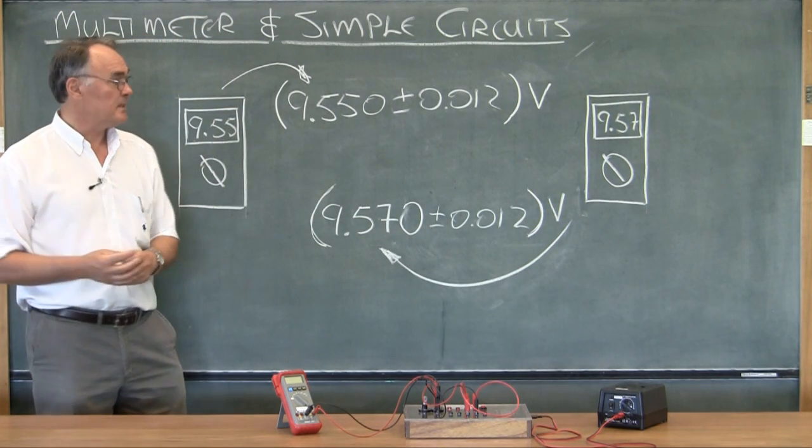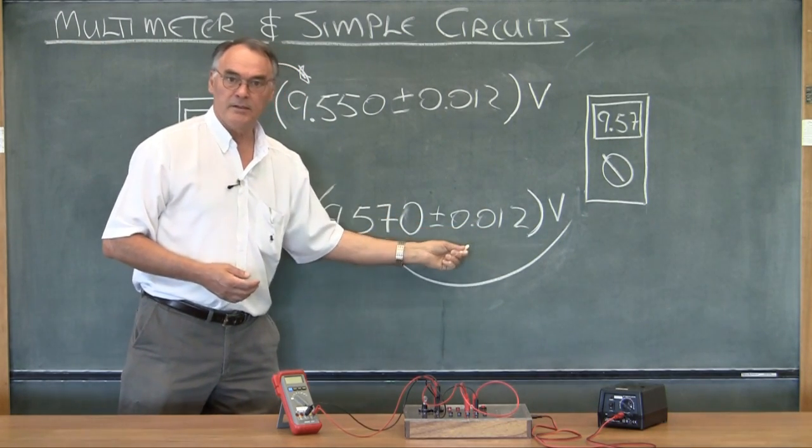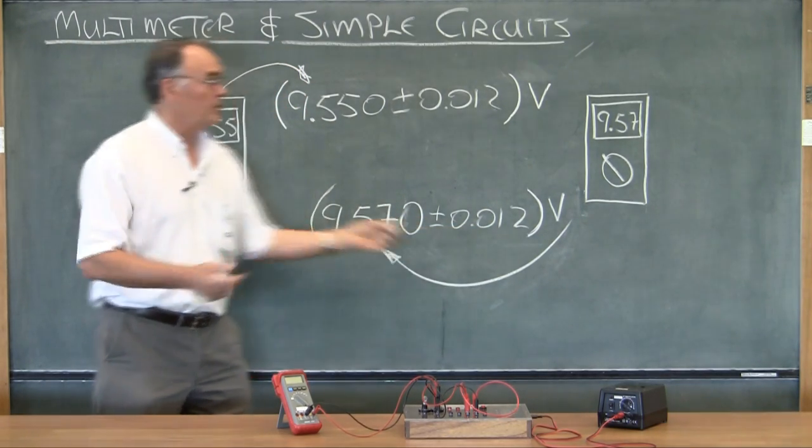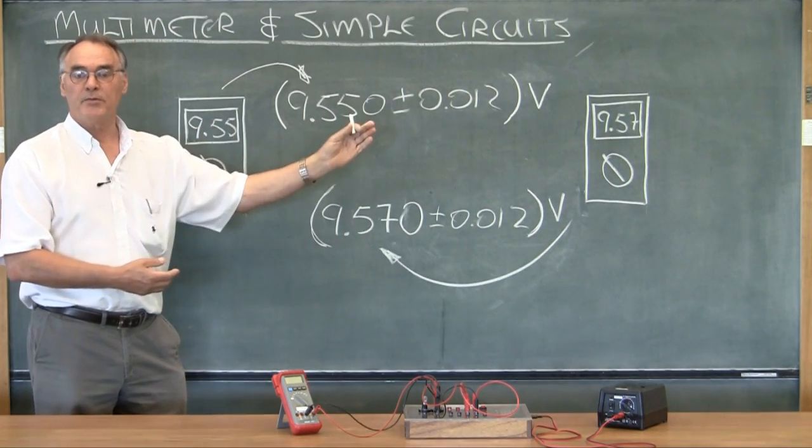What that means is that within an uncertainty like that, it's not possible for us to tell with these instruments whether this voltage is different from that one. They agree within experimental uncertainty.